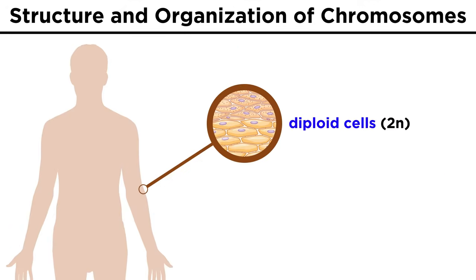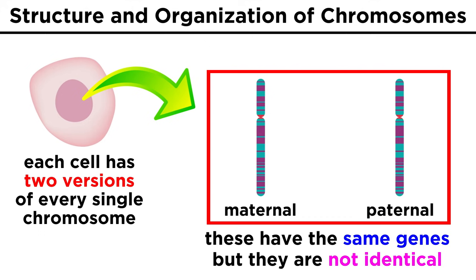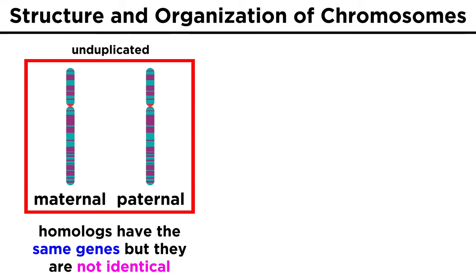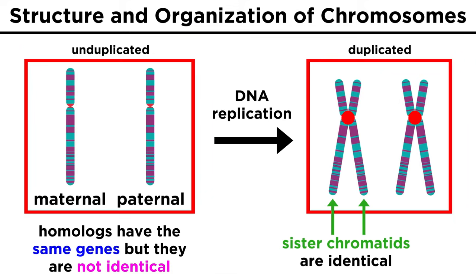In a human diploid cell, which is every cell in your body except for reproductive cells, there are two versions of every chromosome — one maternal and one paternal — which makes two sets of twenty-three chromosomes, or forty-six in total. Each chromosome will duplicate through DNA replication to give two identical sister chromatids.